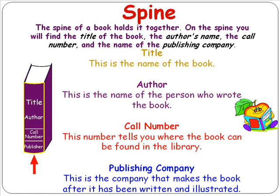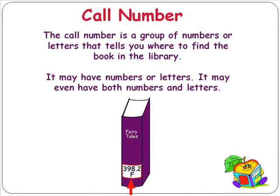The spine of a book holds it together. On the spine you will find the title of the book, the author's name, the call number, and the name of the publishing company. The call number is a group of numbers or letters that tells you where to find the book in the library. It may have numbers or letters, or even both numbers and letters.